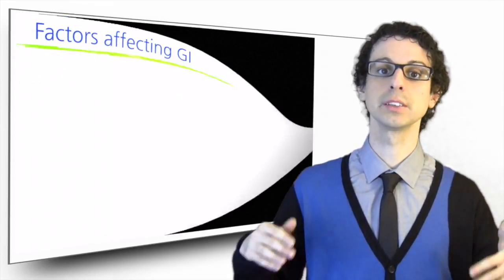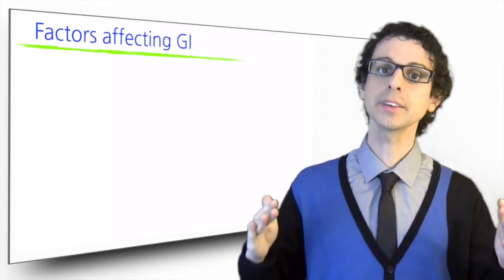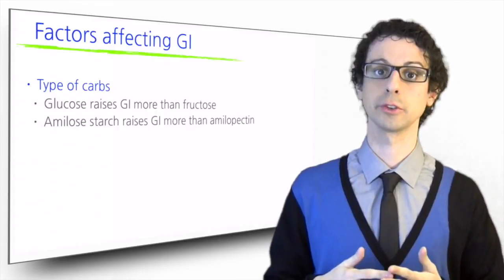The composition of a food is of course the first determinant of its glycemic index. In particular, two key factors are the type of carbs and the presence of other nutrients.